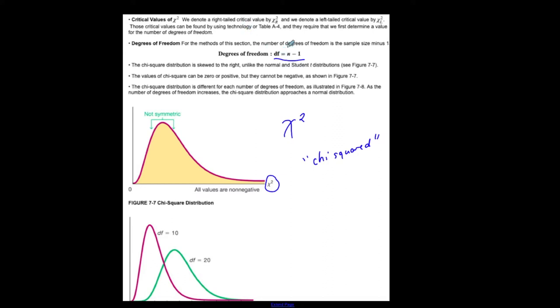We're going to need degrees of freedom because the shape of the curve is dependent on sample size. There are two types of critical values you'll need: a chi-squared right-tailed critical value and a chi-squared left-tailed critical value. The left-tailed critical value is located in the left tail, and the right-tailed critical value is located in the right tail.